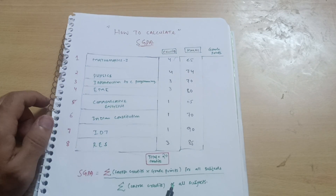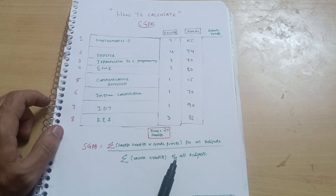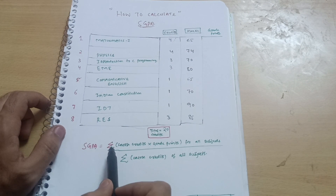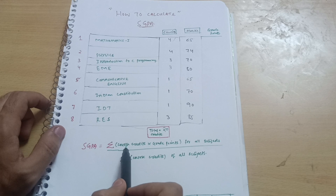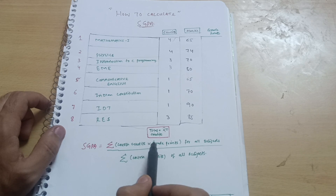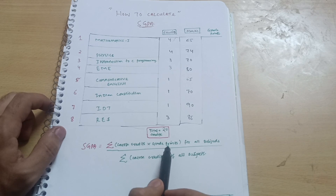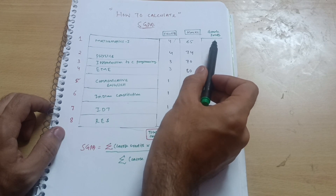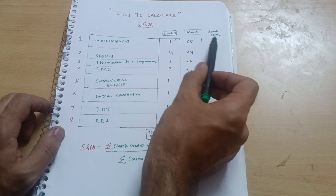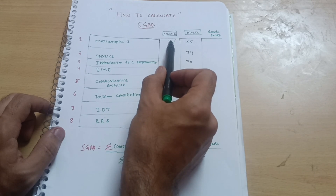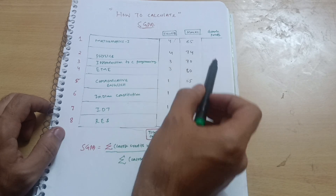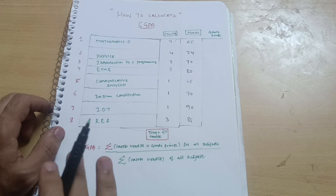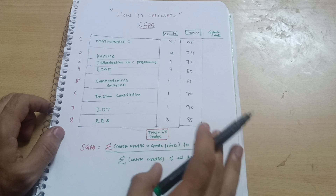Now the main thing is grade points. The formula for SGPA is: SGPA = Summation of (Course Credits × Grade Points) divided by total credits. First we have to calculate the grade points for each subject, then multiply those grade points with their respective credits, and then do the summation to get the SGPA value.